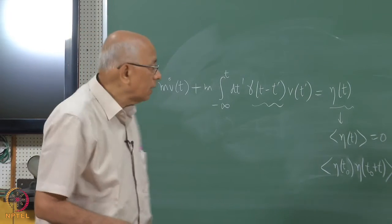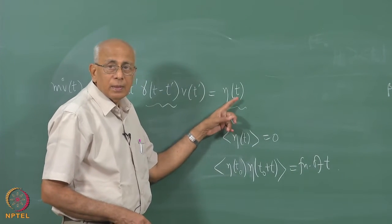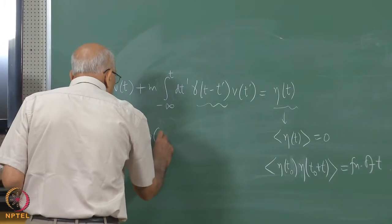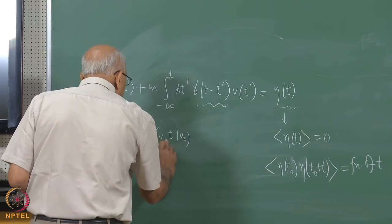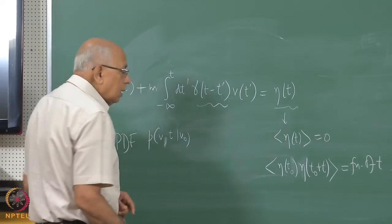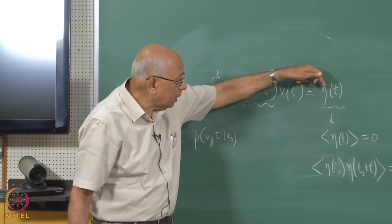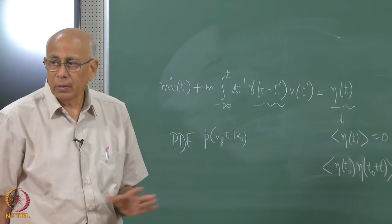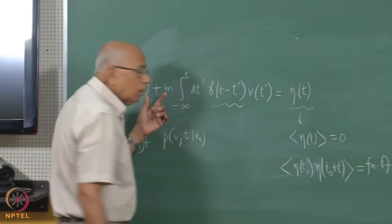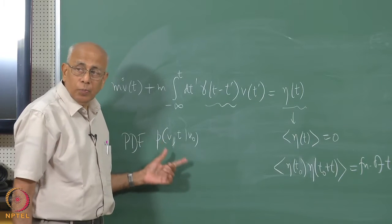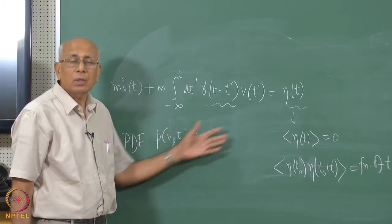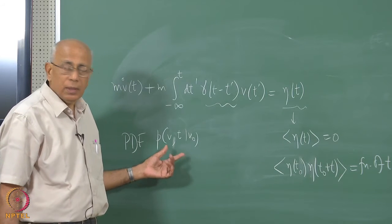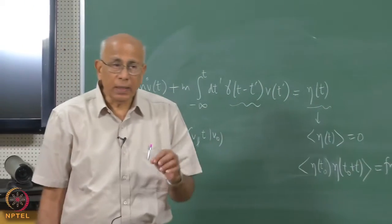There is an interesting theorem: if the noise eta is stationary and Gaussian, then the two-point conditional density P(V, t | V-naught) satisfies an equation that looks very much like a Fokker-Planck equation. But it is not a genuine Fokker-Planck equation, because if the process is not Markov, the two-point conditional density alone does not determine the rest of the process — you need all the joint densities. The fact that this satisfies a Fokker-Planck-like equation helps compute autocorrelations, but does not capture the full nature of the stochastic process.